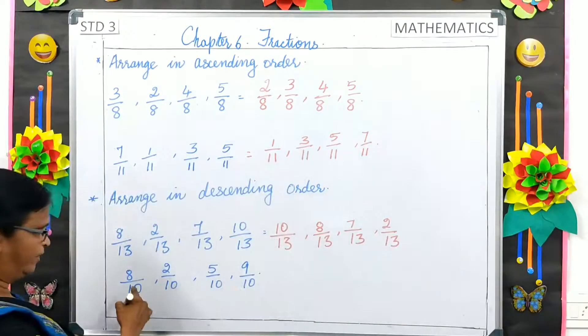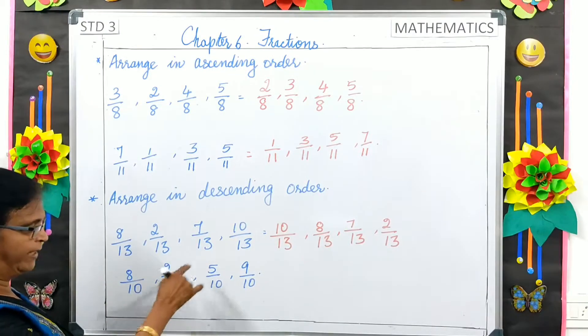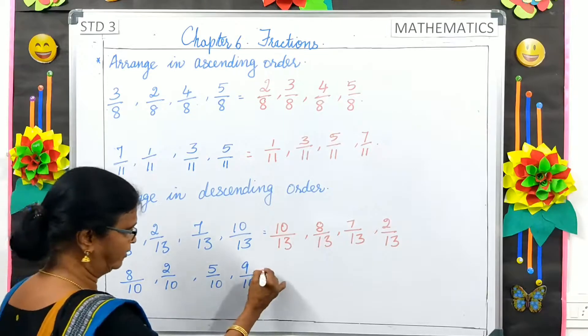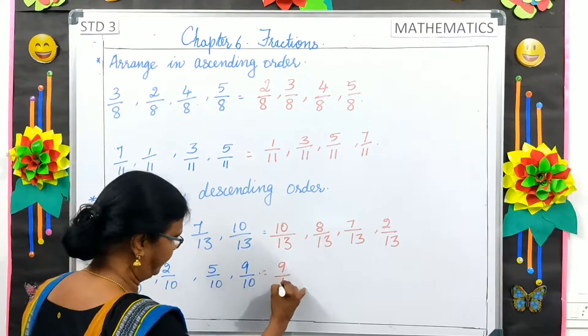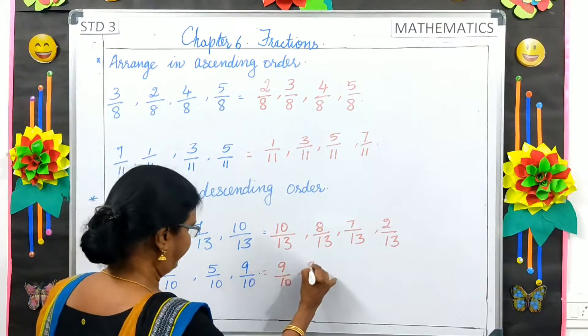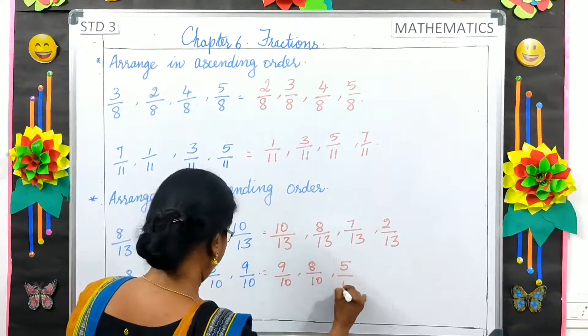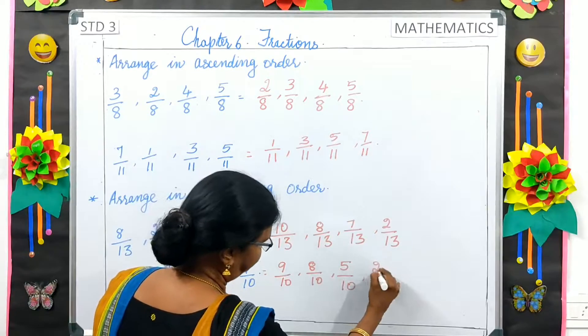Same way, here, 8 by 10, 2 by 10, 5 by 10, 9 by 10. 9 is the largest numerator, so 9 by 10, 8 by 10, 5 by 10, and then 2 by 10.